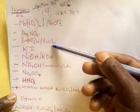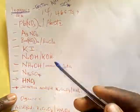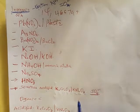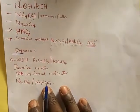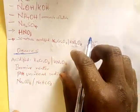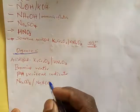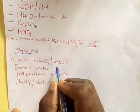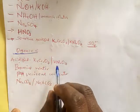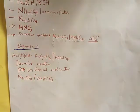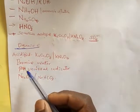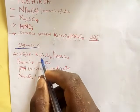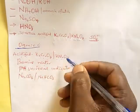Once you see those inorganic reagents, you will be sure that you are going to give inferences for cations and anions only. For organic tests, the key reagents to look out for are: bromine water, universal indicator, acidified potassium dichromate, and acidified potassium permanganate. Whenever you see these reagents, you will be sure that you are dealing with organic chemistry.